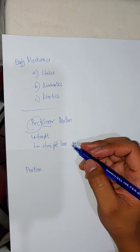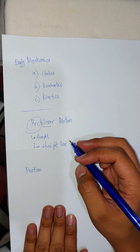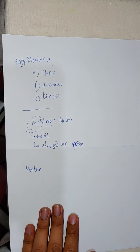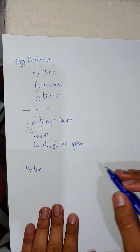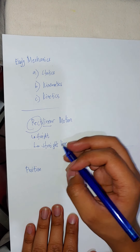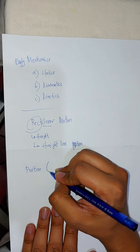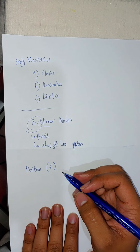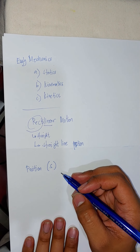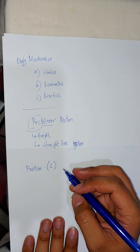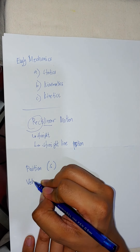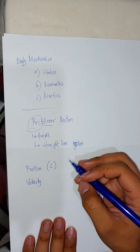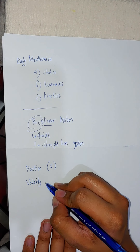We talked about position. Position is a vector quantity — it is the position of a particle. Since it is a vector quantity, it has both a magnitude and a direction. We use the symbol s to denote position.